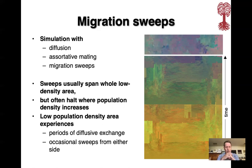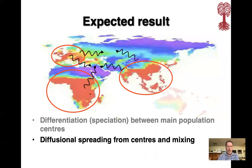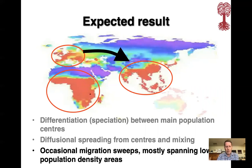So the low population density area experiences periods of diffusive exchange and occasional sweeps from either side. The expected result — going back to the map of the old world — is differentiation and speciation between the main population centers of Europe, Africa, and Southeast Asia. Between them, in the low population density area, we have diffusion and spreading of mutations, but also genes from the high population centers. And once a sweep gets into the low population density area from one of the population centers, it has a good chance to sweep a long way.